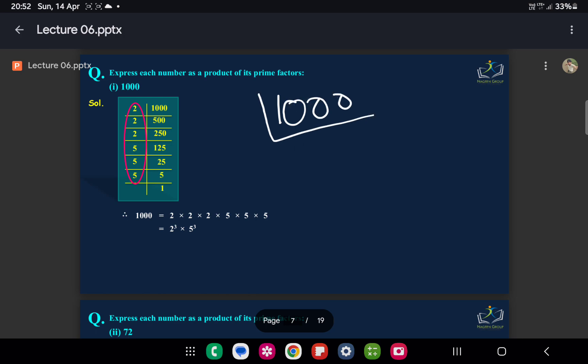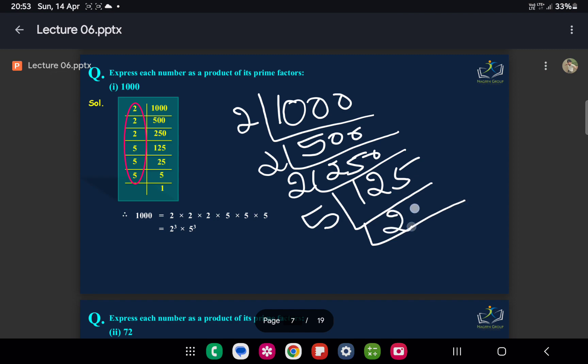Divide 1000 by 2 to get 500, then divide by 2 again to get 250, then divide by 2 again to get 125. Now 125 can only be divided by 5: 125 divided by 5 is 25, then 25 divided by 5 is 5, then 5 divided by 5 is 1.